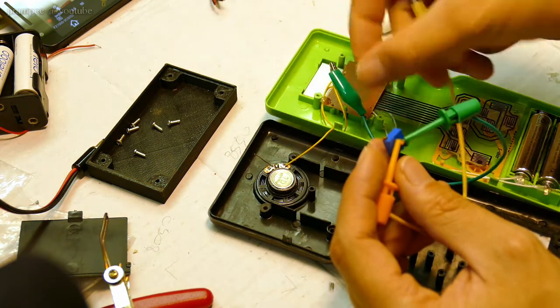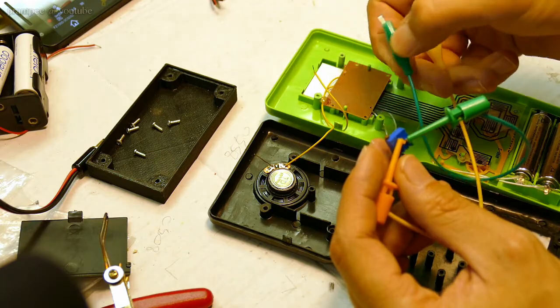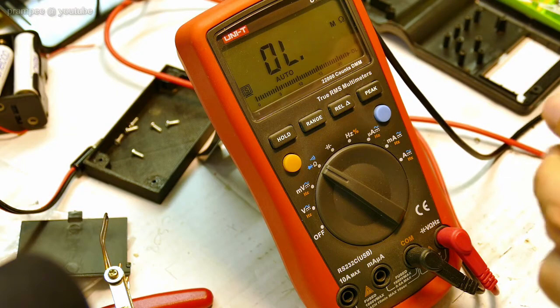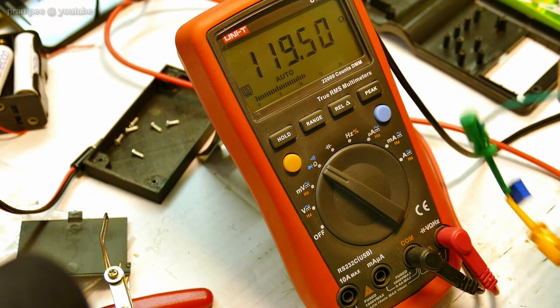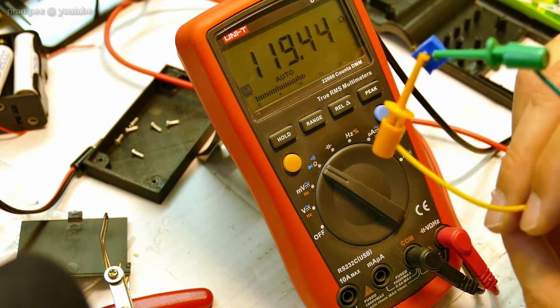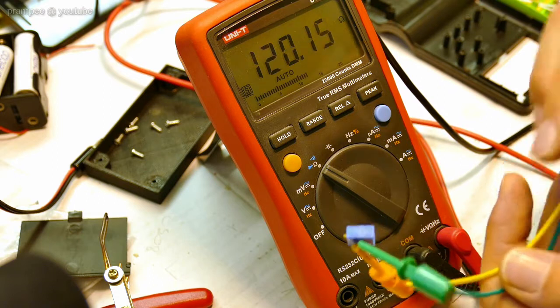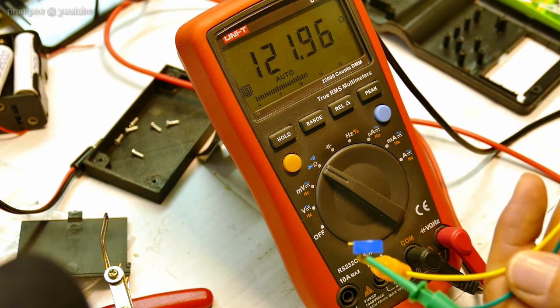So the next thing is to measure what is the resistance now. So the resistance we have here is about 100-120 ohms.